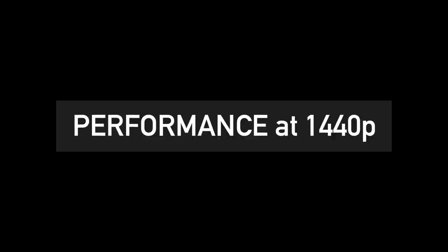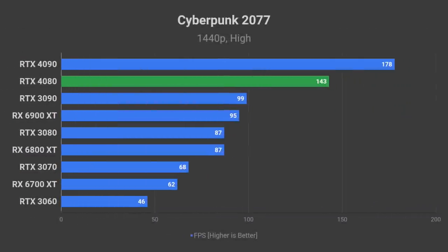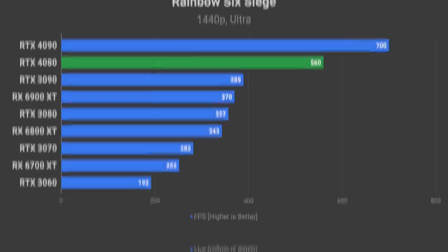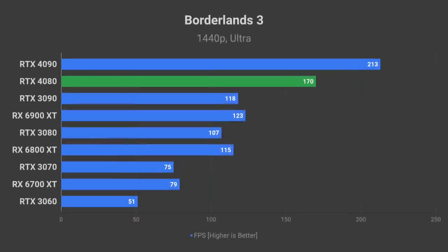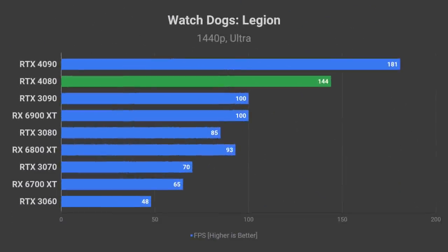Now on to 1440p resolution. The RTX 4080 will be a great option for someone who likes playing even AAA games at very high framerates. Cyberpunk 2077 should run at close to 140 FPS on the high preset. You should be able to reach over 500 FPS in Rainbow Six Siege if your CPU and monitor can handle it. Borderlands 3 at 1440p ultra preset should deliver close to 170 FPS average. Even in Assassin's Creed Valhalla you should be able to squeeze out over 120 FPS on ultra-high quality, and Watch Dogs Legion should be silky smooth at 144 FPS.